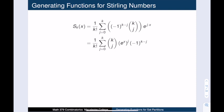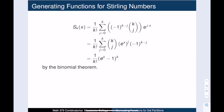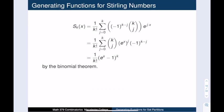And this expression should now ring a bell for us. It looks like the binomial theorem. So it is the sum of (a plus b) to the k, where a equals e^x and b equals -1. So we reach our final simplification. The exponential generating function for set partitions into k parts is 1 over k factorial times (e^x minus 1) all raised to the kth power.